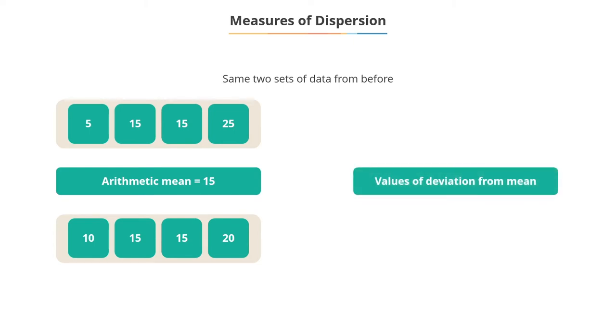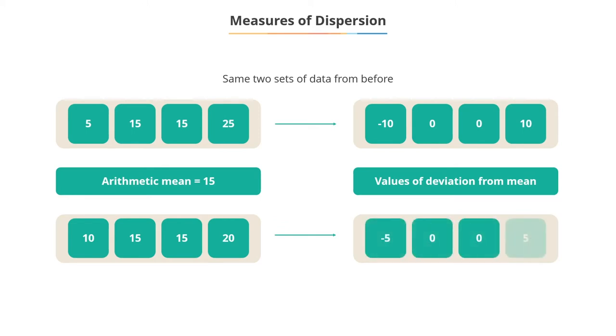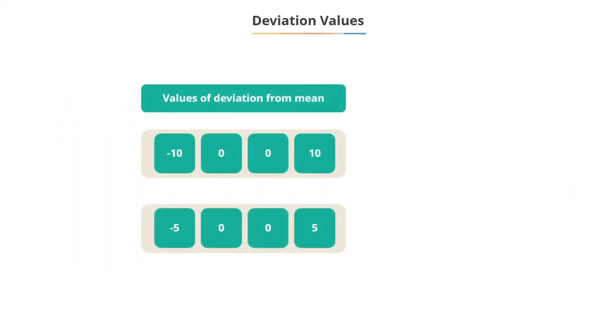The values of deviations in the two data sets from the mean are minus 10, 0, 0, 10, and minus 5, 0, 0, 5. If you observe, in both cases the total deviations are 0.